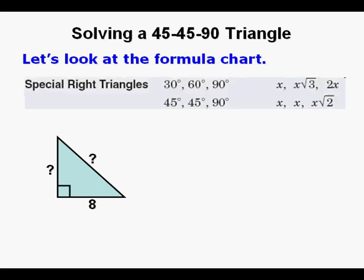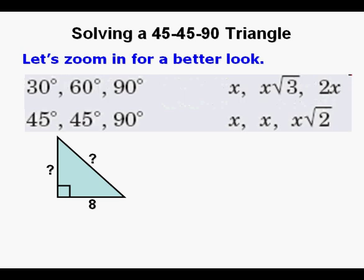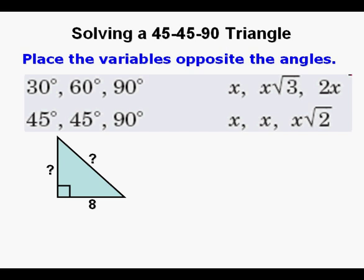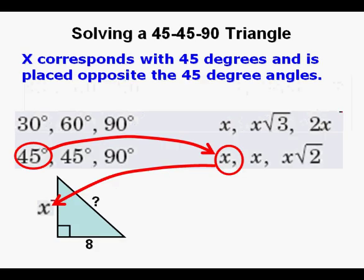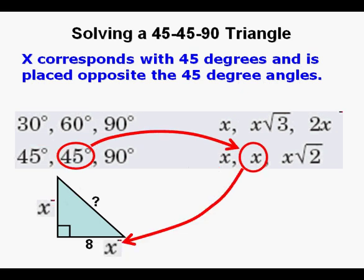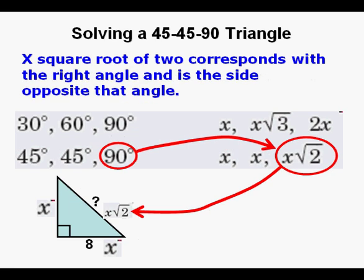Now we look at our formula chart and we see that we place the variables opposite the angles. So we place x opposite one side, x opposite the other side, and then x√2 on the long side which is opposite the right angle.